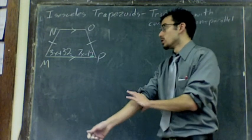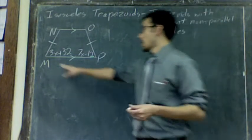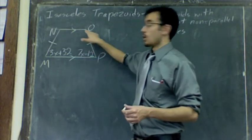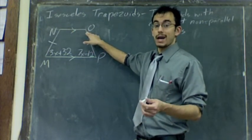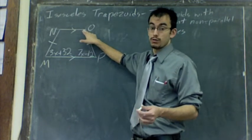What we know is that the base angles of an isosceles trapezoid, M and P, are congruent. We also know that N and O are congruent. Base angles are the two angles that are attached to the parallel side. N and O are attached to the parallel sides, so they're congruent.